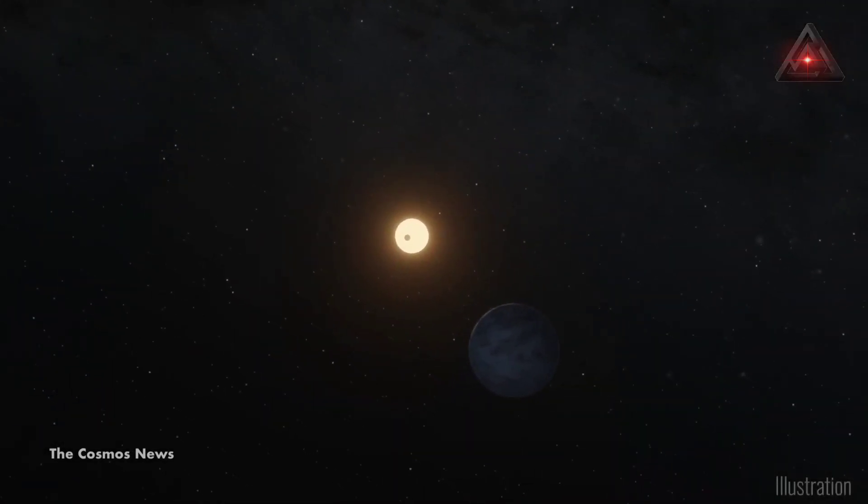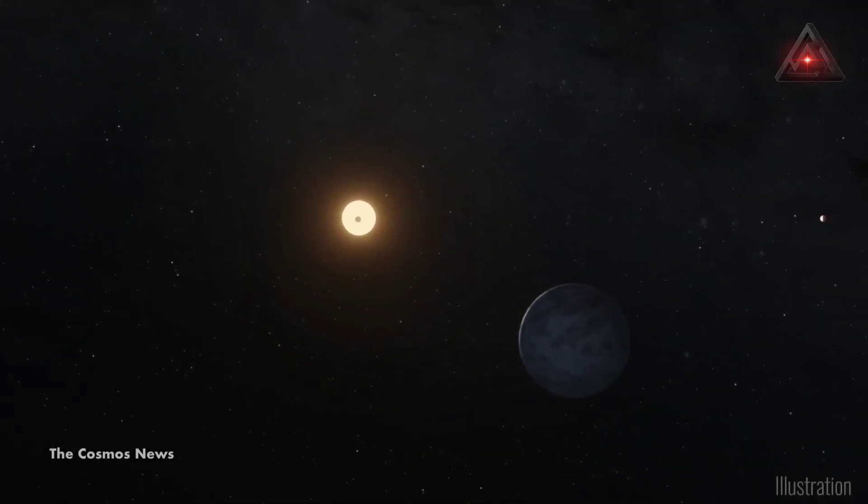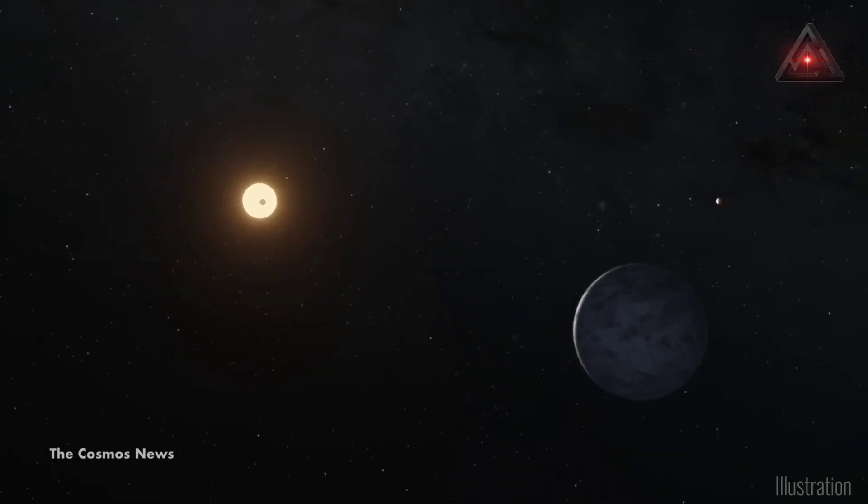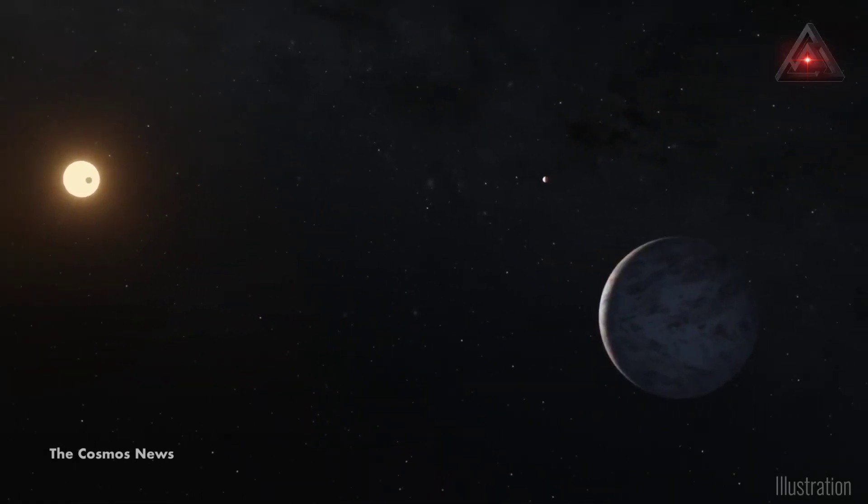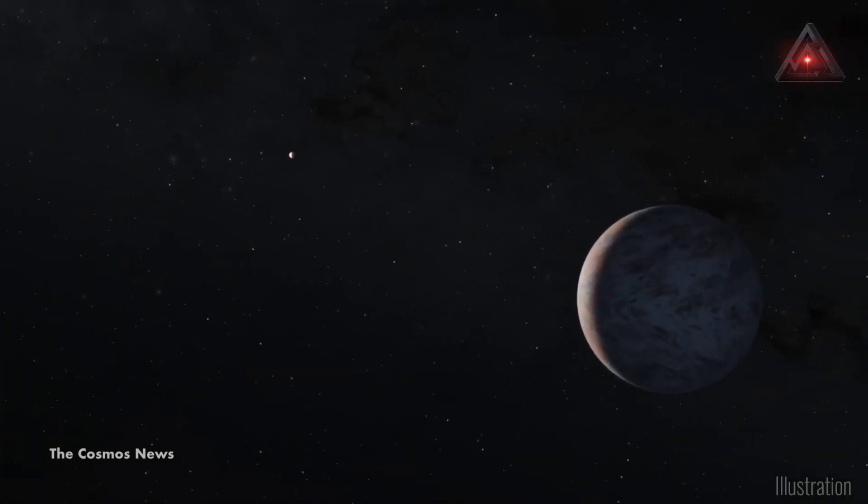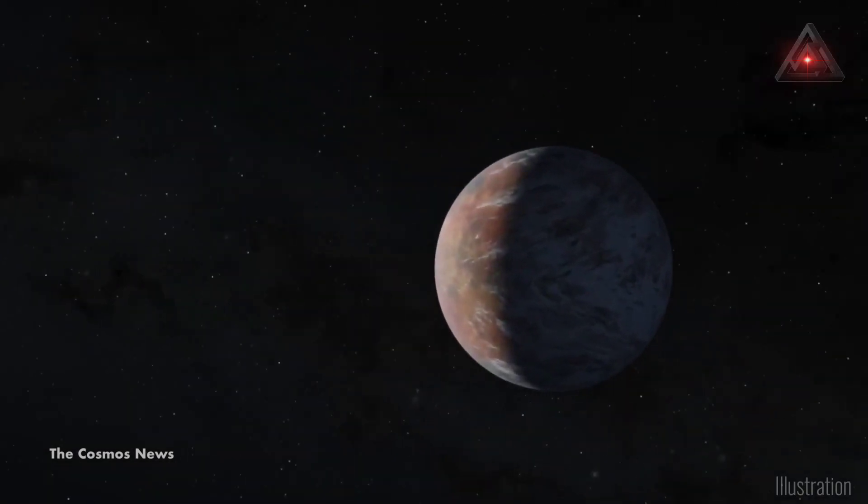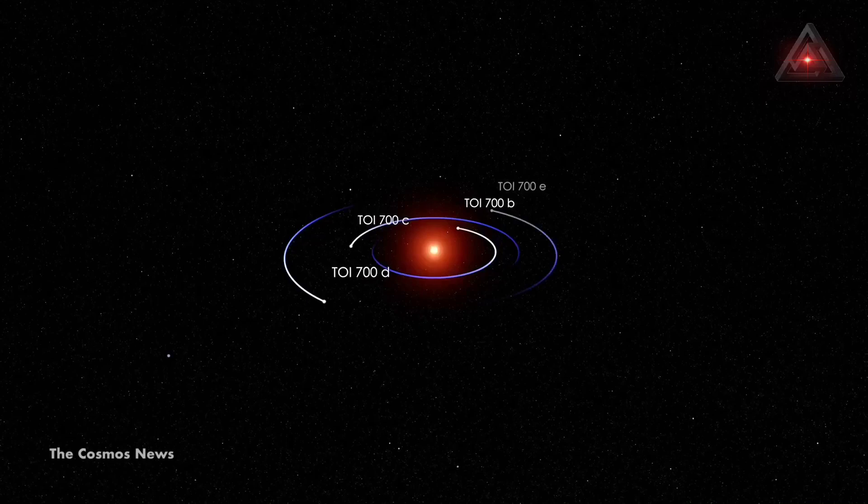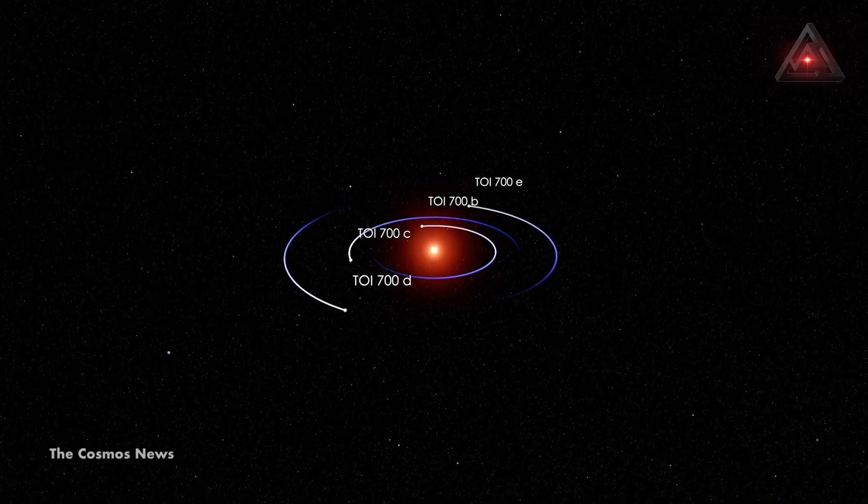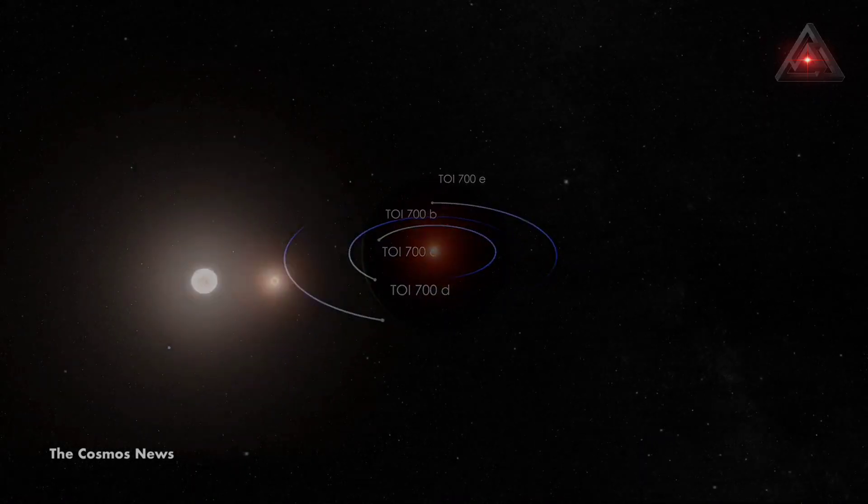A NASA mission has spotted an Earth-size exoplanet orbiting a small star about 100 light-years away. The planet, named TOI-700E, is likely rocky and 95% the size of our world. The celestial body is the fourth planet to be detected orbiting the small, cool M dwarf star TOI-700.